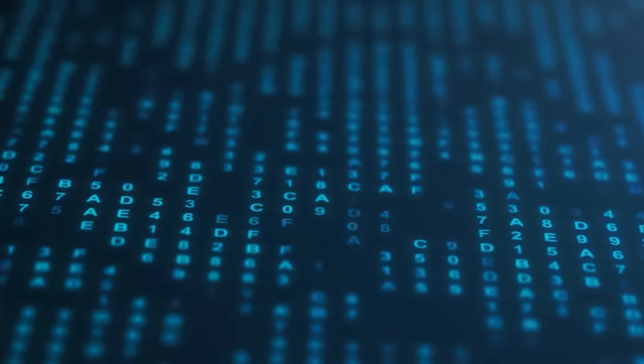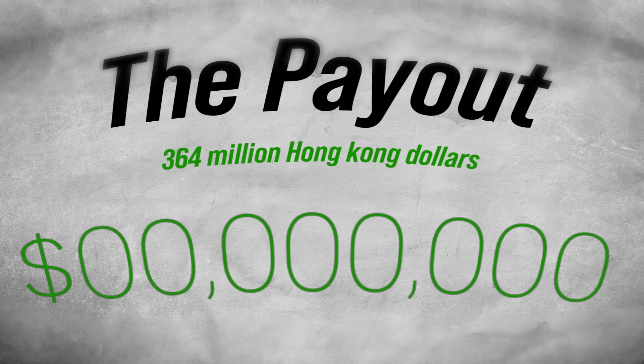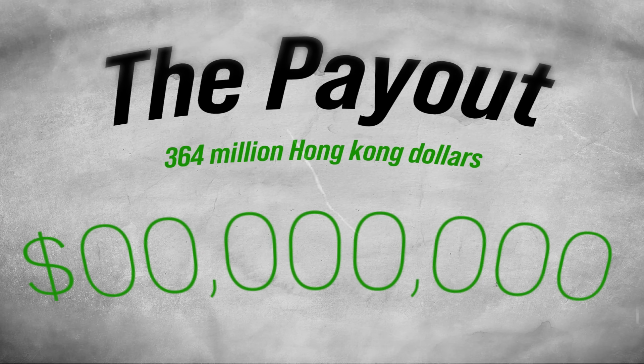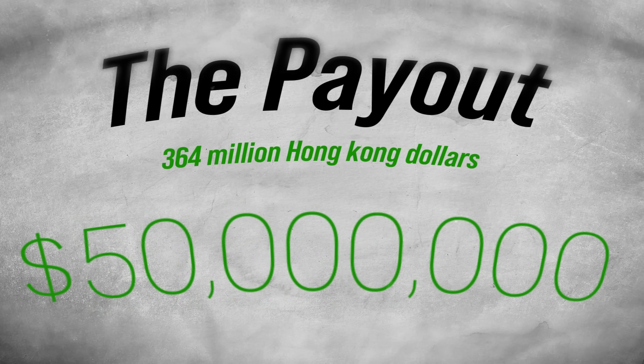First place, second place, third place. In exactly the order the algorithm predicted. The payout, $364 million Hong Kong dollars, roughly $50 million U.S. dollars.